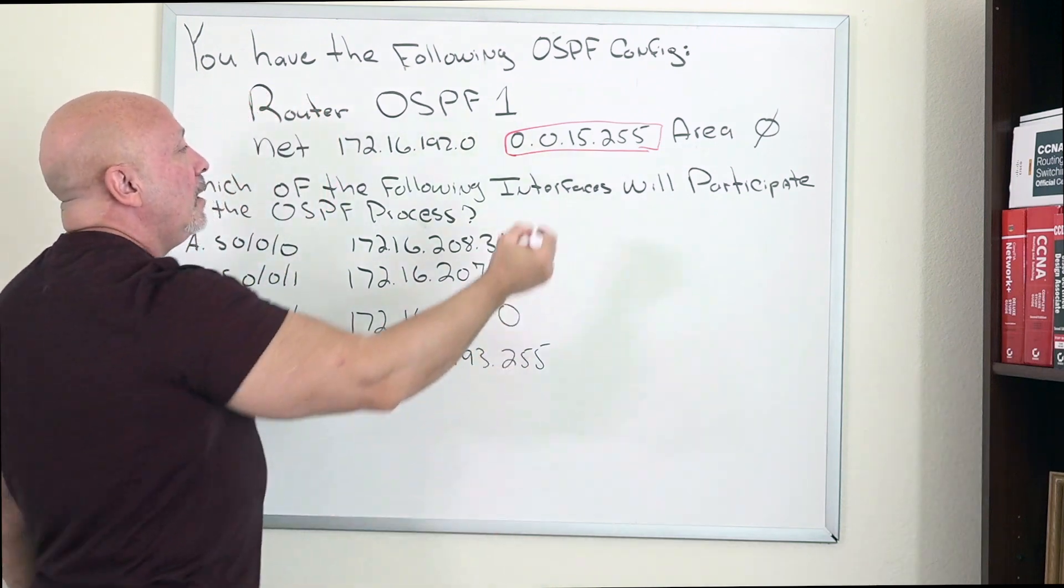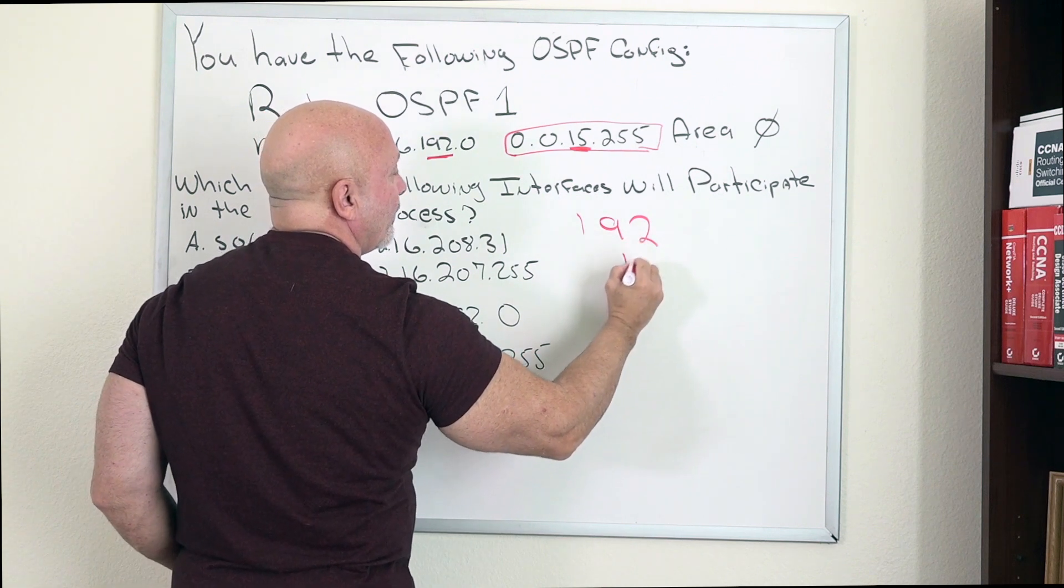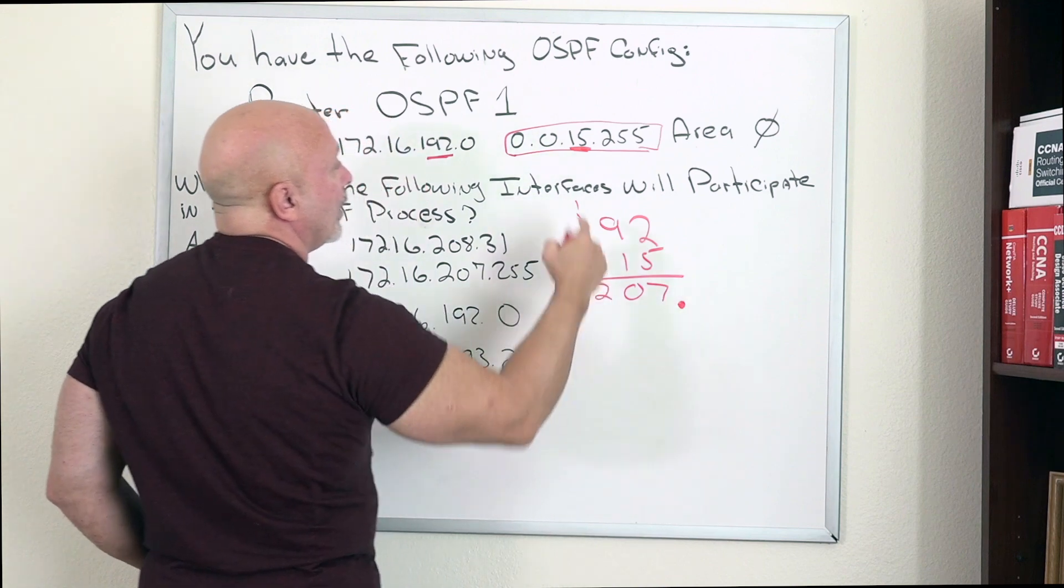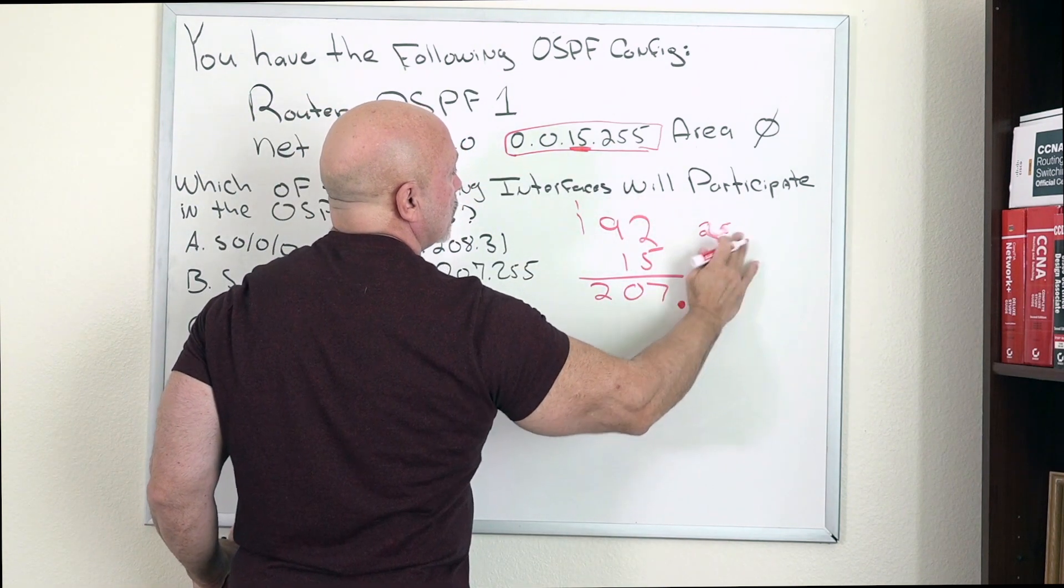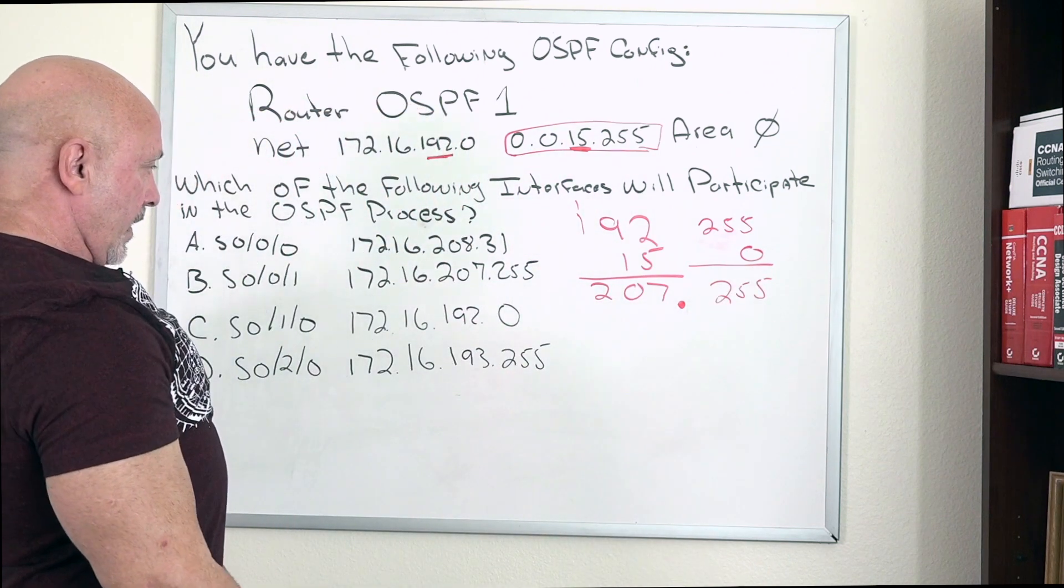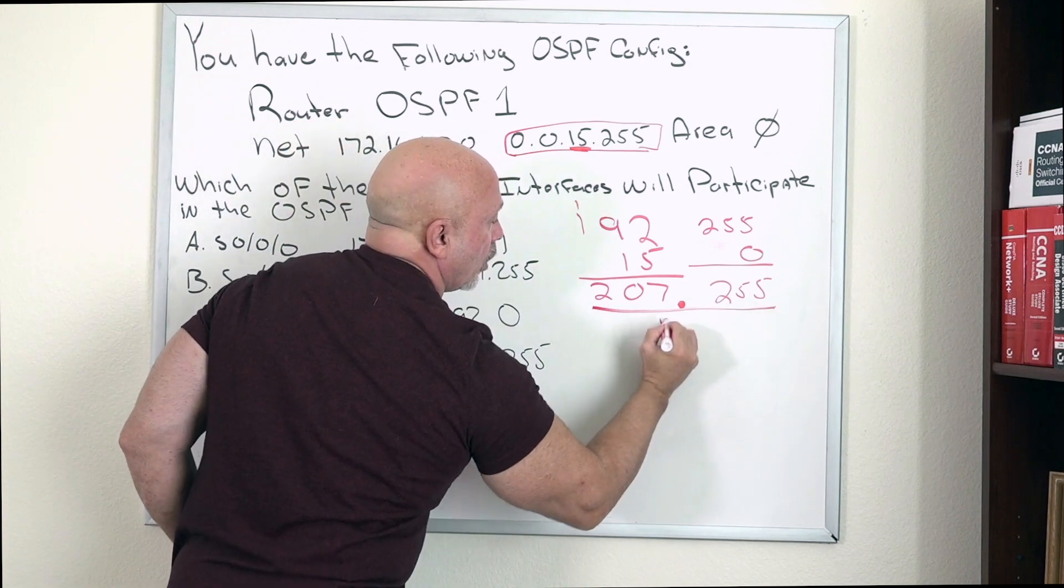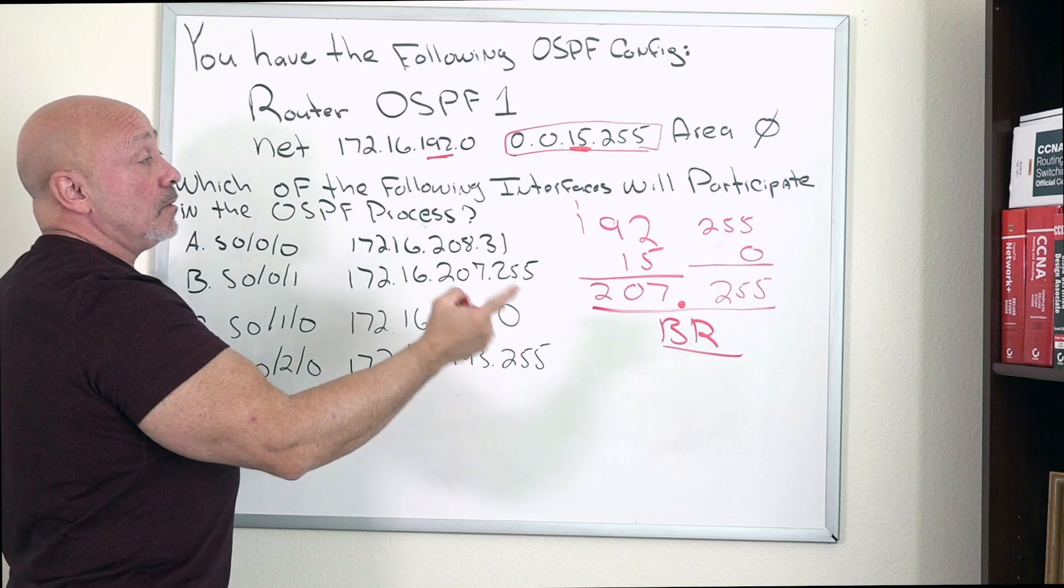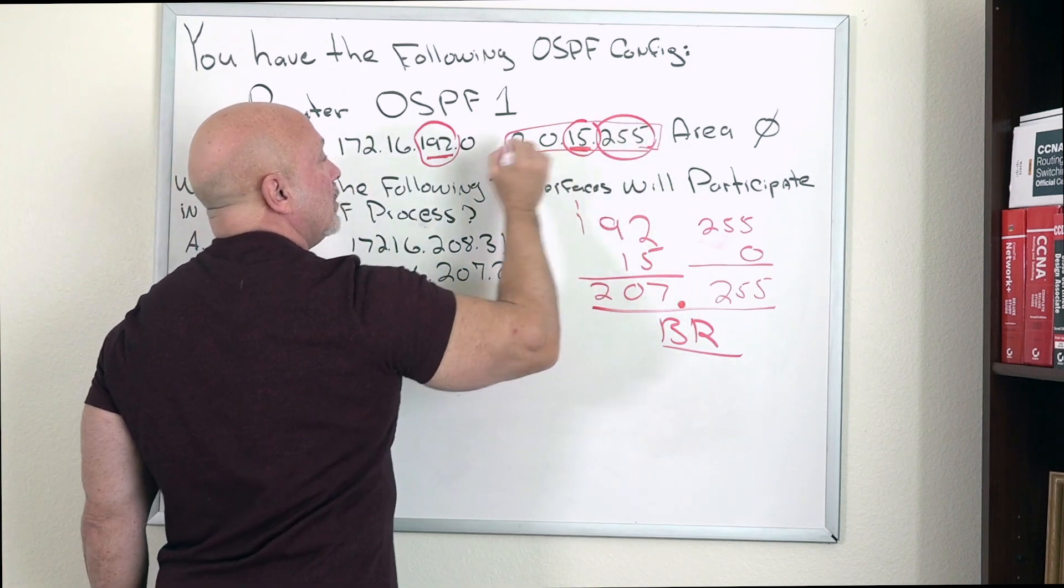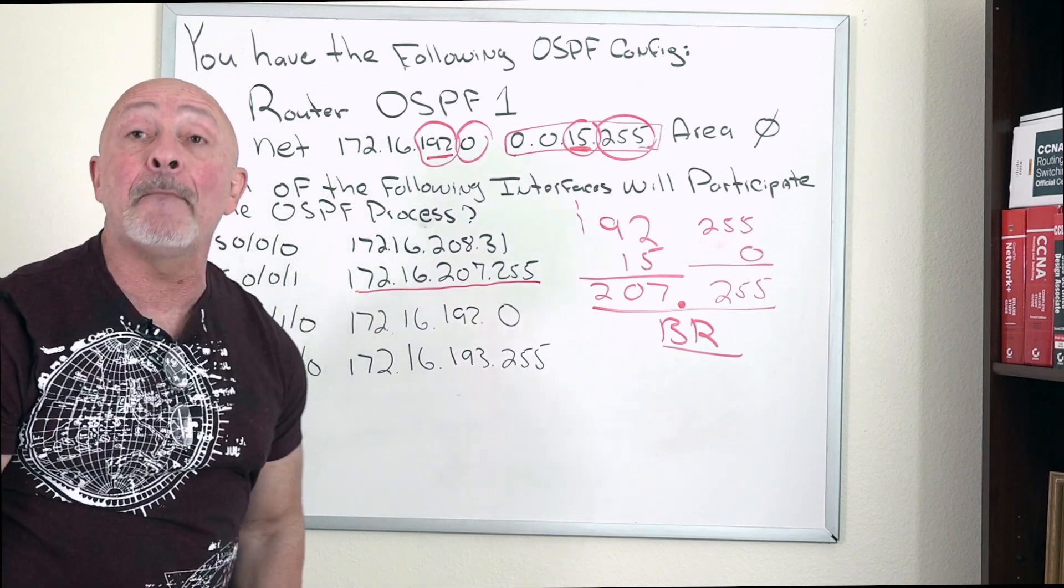The key to this is just the wildcard mask. Focus on that and look how simple this is. Third octet: 192 plus 15, that's 207. Fourth octet: 255 and 0, that's 255. So that is your broadcast address. You added this number to this number, third octet to third octet, fourth octet to fourth octet, which gives you 172.16.207.255.